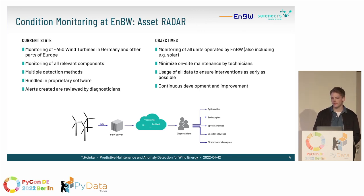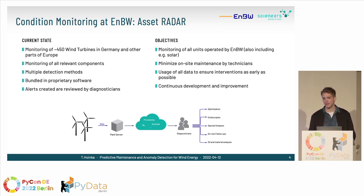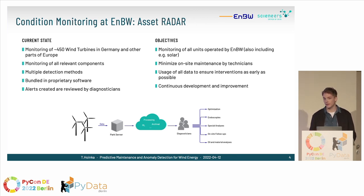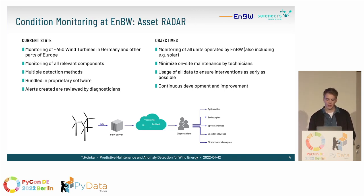The overall objectives of Asset Radar are to minimize on-site maintenance — going there as little as possible but as early as possible. The earlier you repair something, the cheaper it is. If you wait too long, the worst case is replacing the whole component. We also want to cover all units operated by EMBW, including solar and water power plants, use all available data, and continuously develop and improve the application using knowledge gathered from the diagnosticians.